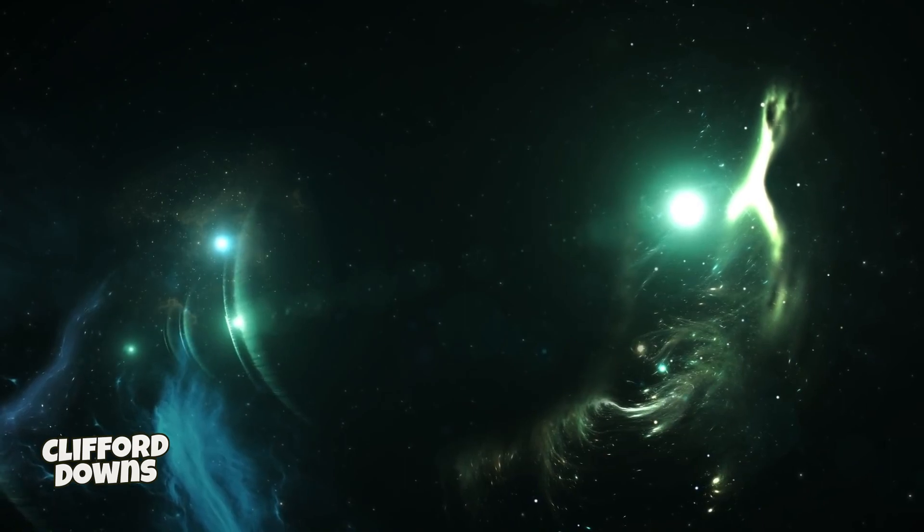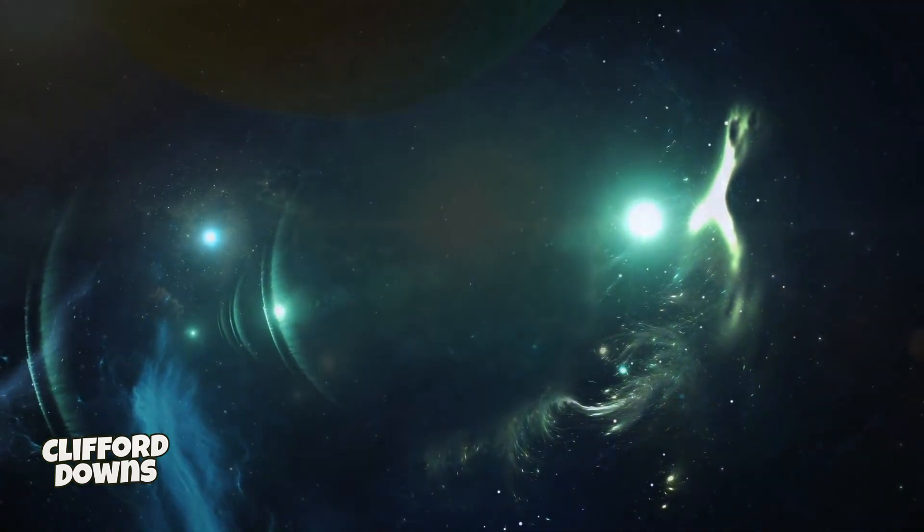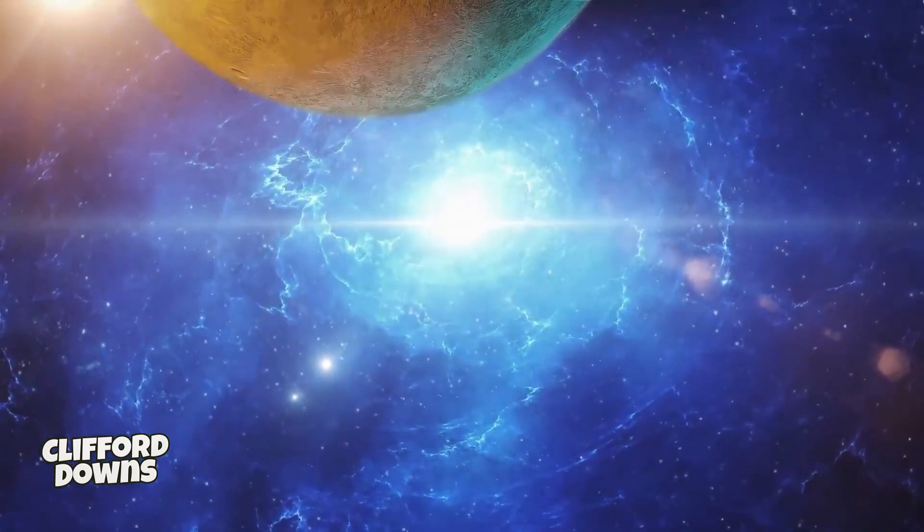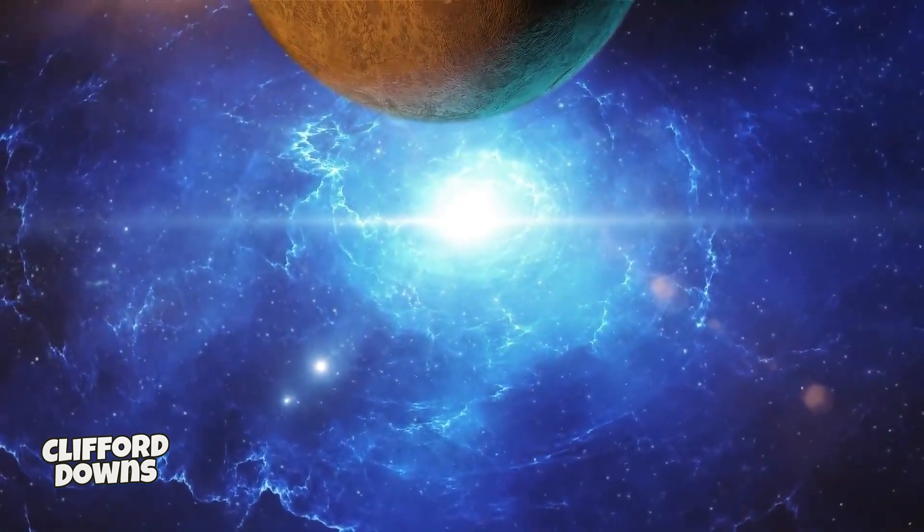But for now, we can observe the Large Magellanic Cloud as a beautiful object in the night sky. The easiest way to find it is to imagine a line between the stars Sirius and Canopus; the galaxy will be located near this line.